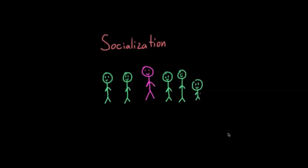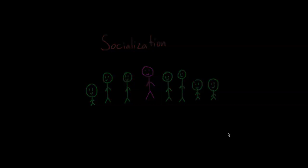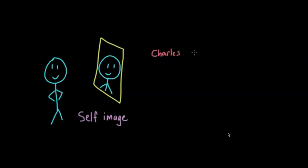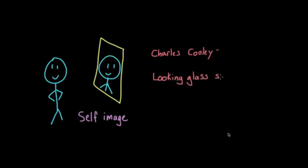Socialization can also include everyone else we come across in daily life — our doctors, nurses, celebrities on TV, even the people standing in line next to us at the supermarket. They all have something to teach us about how we should act within our community. Socialization also shapes our self-image, and sociologist Charles Cooley used the term 'looking glass self' to describe this process.